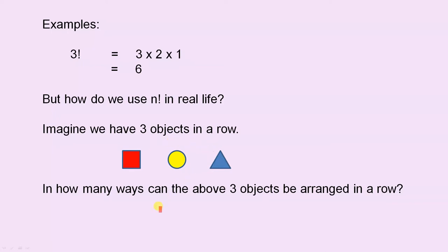In how many ways can the above 3 objects be arranged in a row? That is one particular arrangement, where the square is first, the circle is second, and the triangle is third. So, how many arrangements are there that are all different?